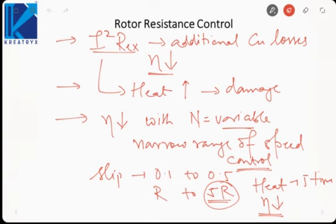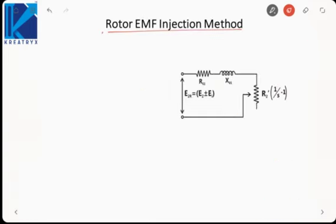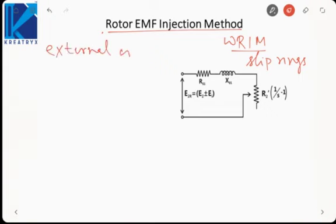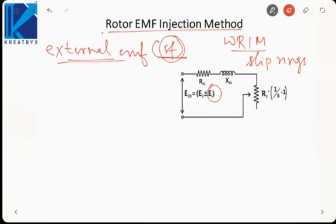The next method is rotor EMF injection, applicable only to wound rotor induction motors via slip rings. An external EMF source with frequency sf is connected — this frequency is required because the injected EMF must match the frequency of the induced rotor EMF to be superimposed on it. The injected EMF can be in the same phase or opposite phase to the induced EMF.